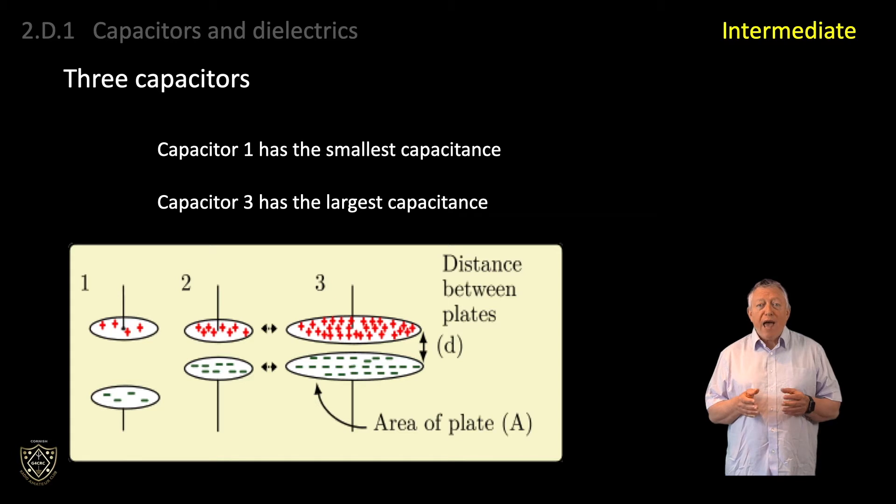The charge on any of the three capacitors could also be increased by increasing the voltage across the capacitor. Note that increasing the voltage does not change the capacitance, which remains the same whatever the applied voltage. It simply increases the charge by forcing the charge carriers to be clumped more closely together. This is a bit like putting air into a scuba tank. Increasing the pressure puts more air into the tank, but does not increase the volume of the tank.